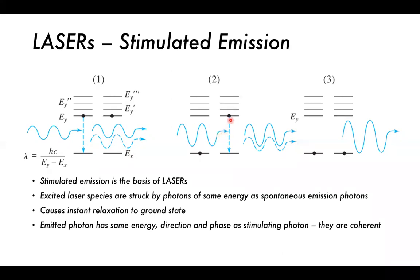This more intense photon then does the same with the next excited state electron. We have two electrons in the excited state - the first is struck by a spontaneous emission photon, causing immediate relaxation. The photons released with the same energy, direction, and phase constructively interfere to increase intensity. They do the same with the next excited state electron, which also instantaneously relaxes. These two photons then combine again to give an even more intense photon. All are constructively interfering, increasing the intensity of the light.